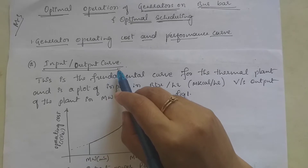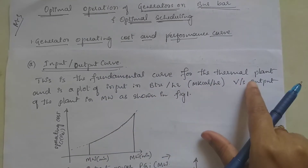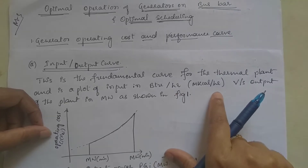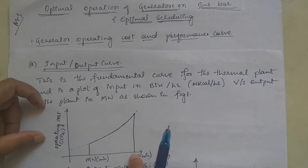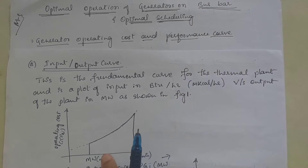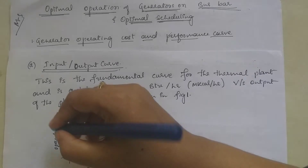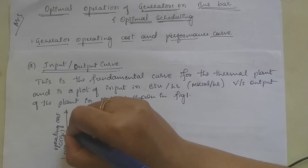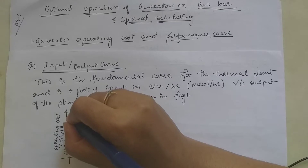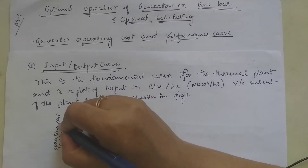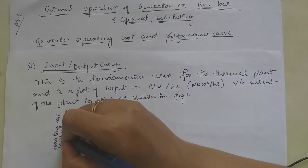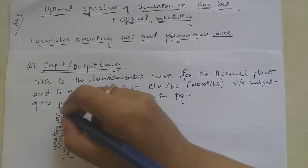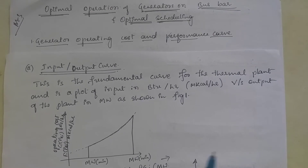The first curve is the input-output curve. This is the fundamental curve for the thermal power plant and it is the plot of input in British thermal units per hour or m kilocalorie per hour versus output of the plant. The input-output curve of generating units specifies the input energy rate represented by Fi(PGi), with units of m kilocalorie per hour, or the operating cost Ci(PGi) in rupees per hour, as a function of generator power output PGi in megawatt.